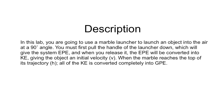In this lab, you are going to use a marble launcher to launch an object into the air at a 90 degree angle. You must first pull the handle of the launcher down, which will give the system elastic potential energy (EPE). When you release it, the elastic potential energy will be converted into kinetic energy, giving the object an initial velocity V. When the marble reaches the top of its trajectory H, all of the kinetic energy is converted completely into gravitational potential energy.